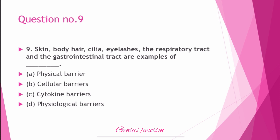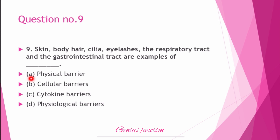Question number 9: Skin, body hair, cilia, eyelashes, the respiratory tract, and gastrointestinal tract are examples of? Options are: physical barriers, cellular barriers, cytokine barriers, and physiological barriers. These are examples of physical barriers. The right answer is A — physical barriers.